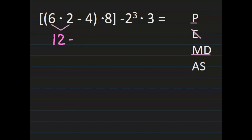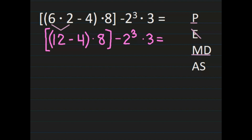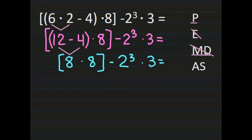Carefully bring the rest of the problem down, paying attention to operation signs, grouping symbols, and exponents. Still working inside the parentheses, I don't have any more multiplication and division — only one more step inside: 12 minus 4 is 8. Bringing the rest of the problem down, we're back at grouping symbols — now looking inside the brackets. There are no more parentheses or exponents inside the brackets. The only step left inside the brackets is 8 times 8.